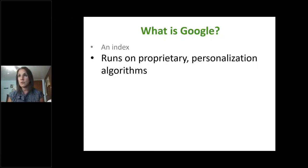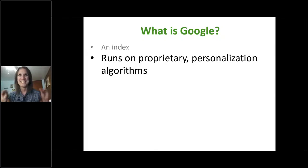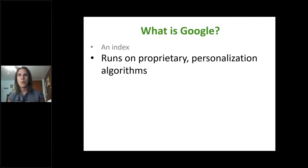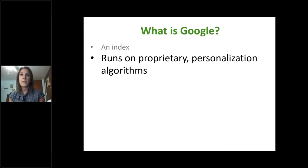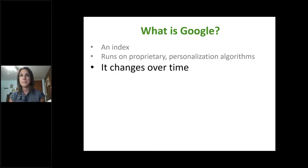You might have noticed that the search box always remains the same — just that one Google search box — but how results are displayed or what kinds of results appear first does change over time, because they're constantly making tweaks to the algorithms.